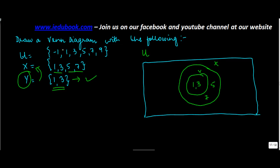And the universal set contains what? It contains -1 and 9 extra. So you put -1 and 9 here. And that's how your Venn diagram is completed.